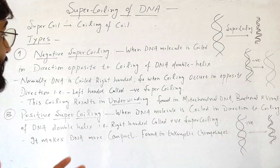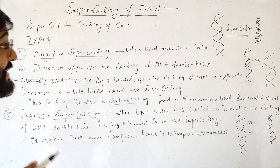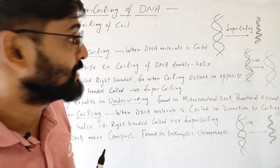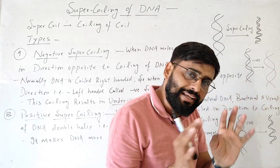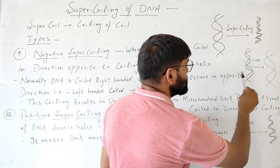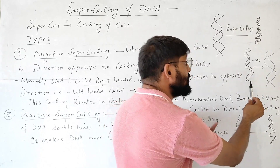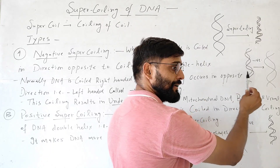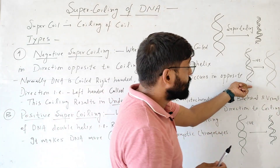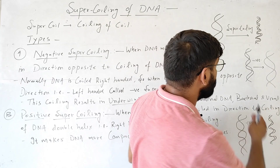Supercoiling in the case of DNA is of two types. The first is negative supercoiling — when the DNA molecule is coiled in a direction opposite to the coiling of the double helix. The DNA double helix normally coils in the right-handed direction. But when further coiling occurs in the opposite direction, meaning the left-handed direction, then this is called negative supercoiling. So this is normal DNA and this is DNA that is in negative supercoiling mode.